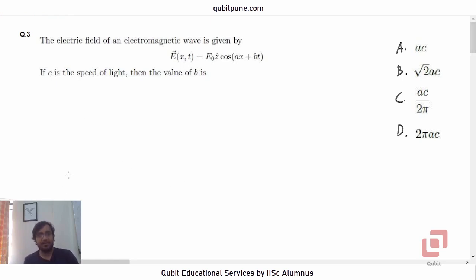Let's read the statement. The electric field of an electromagnetic wave is given by E bar of (x, t) is E naught z cap into cos of (ax + bt). If c is the speed of light, then the value of b is, and we have four options: ac, root 2ac, ac upon 2π, and 2πac.